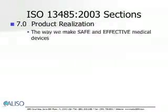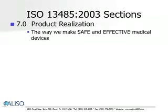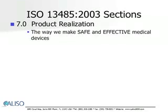Section 7.0, Product Realization — this is how we make safe and effective medical devices. Product Realization is how a company realizes the product, how your product comes to life, and how it will be delivered to your customer. It covers everything from planning or concept, including customer requirements, to design and development, as well as verification and validation of product. Purchasing controls, including supplier qualification, control of production and service provision, identification and traceability requirements, control of customer property, preservation of product, and calibration requirements are all included in this section.